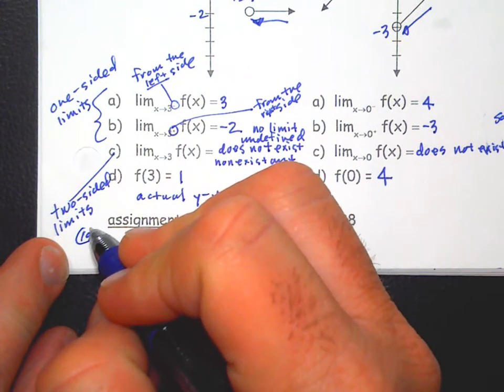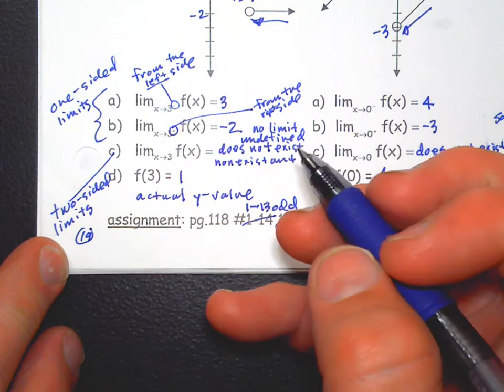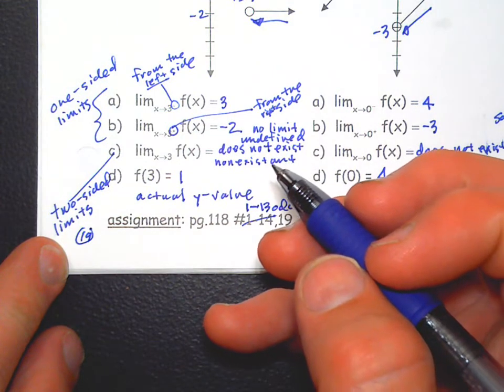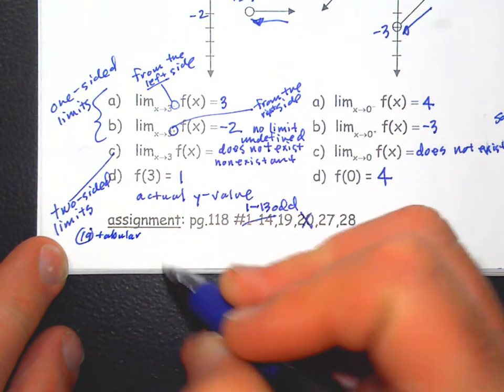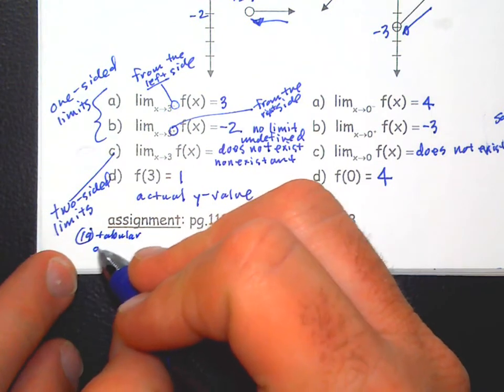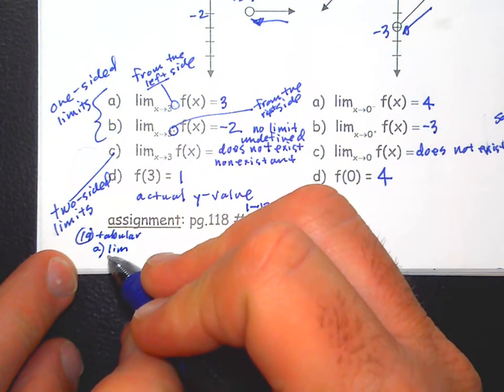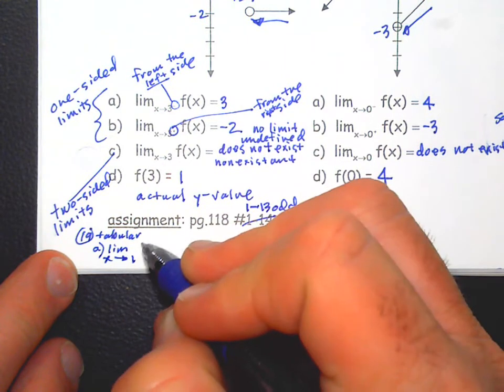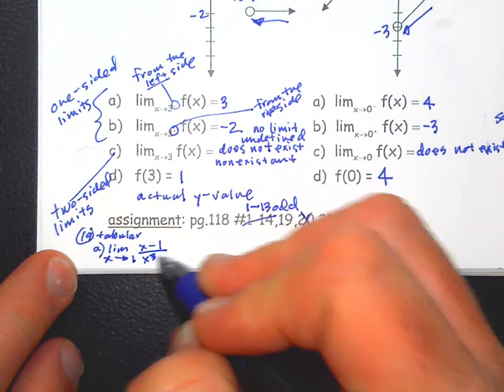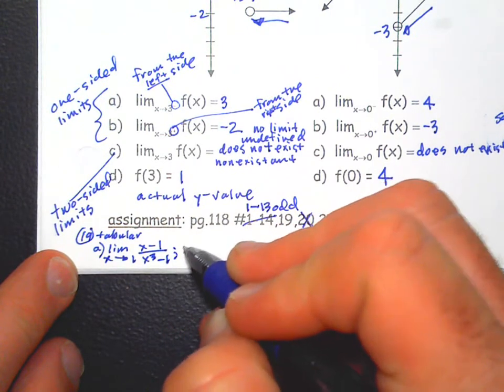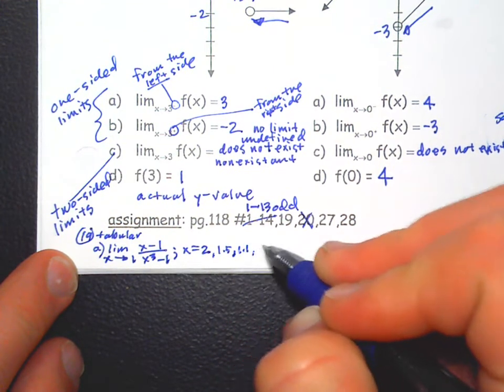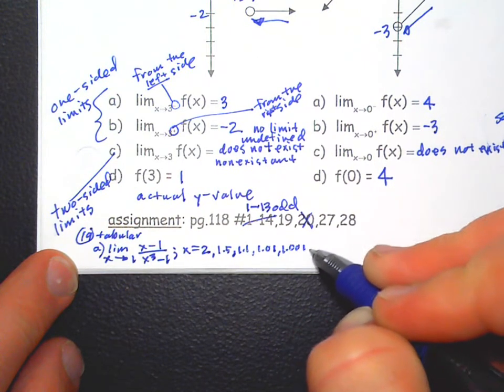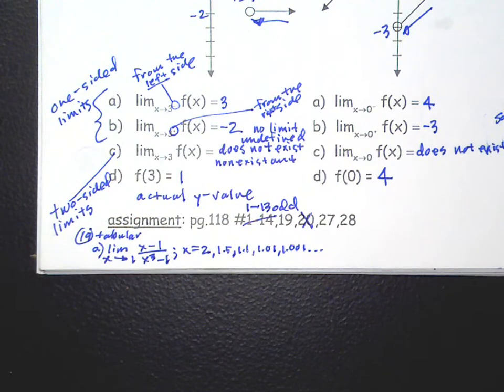Now let me give you a little tip for problem 19. Problem 19 says to use a calculator—it has like a little C for calculator—and this is a tabular approach, meaning we're going to use a table. So like on part a, they give you the limit as x goes to 1 of (x - 1) over (x³ - 1). Then I think they tell you what values of x to plug in: 1.5, 1.1, 1.01, 1.001. So essentially they're telling you, let's approach 1 in a table.